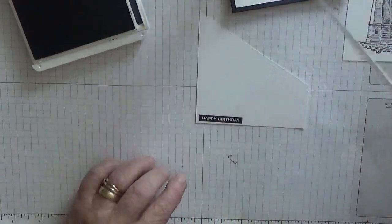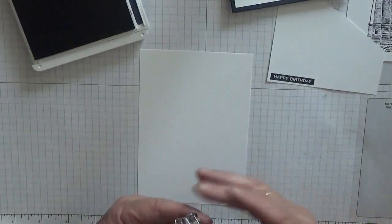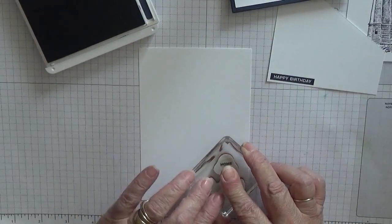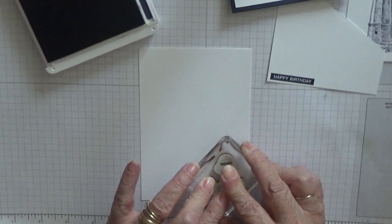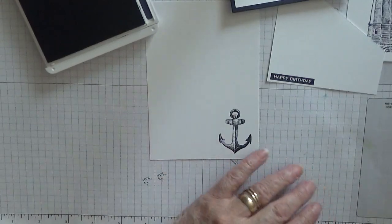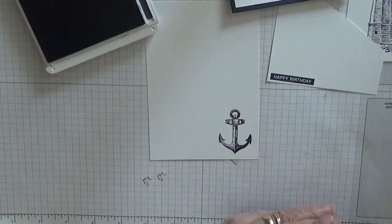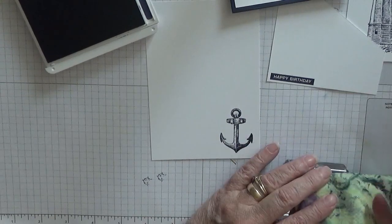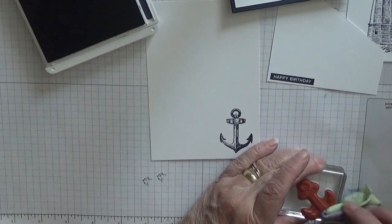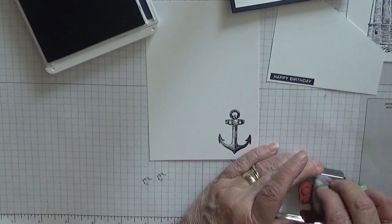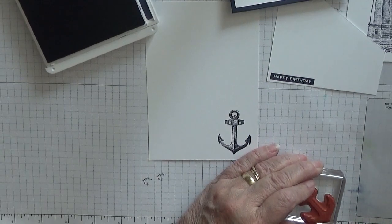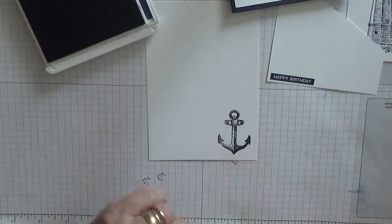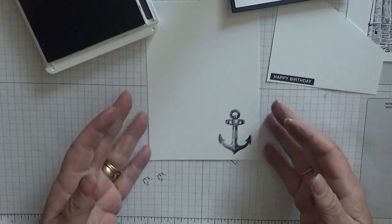Then the inside, we're going to stamp the anchor, and we're just putting it on the right hand corner at the bottom like that. This is Night of Navy, it's the worst thing for me to play with, that and red. Get it all over me. Look, that's off the cloth.